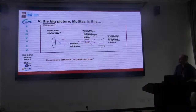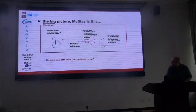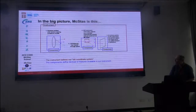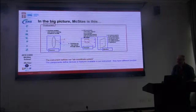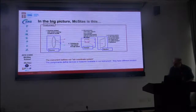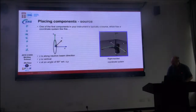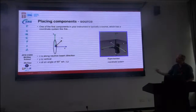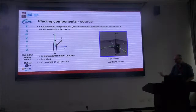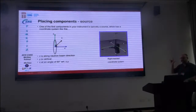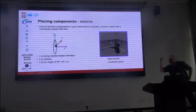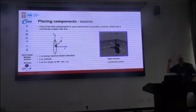Our instrument is defined within a lab coordinate system. We define different components — devices or features in our instrument — being sources, samples, and models, and then we transport neutron rays through that. Placing components typically starts from placing the source, and the coordinate system definition is that Z is our neutron propagation direction.